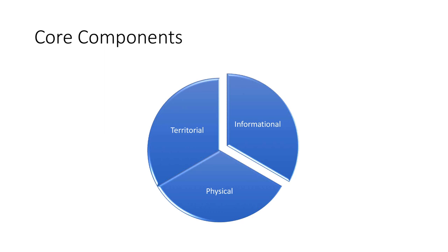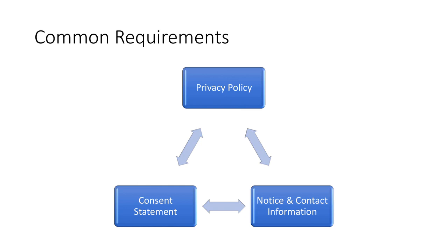Territorial privacy in law refers to your stuff — when I park my car, I expect it to be there when I get back. Informational privacy isn't just about the information we create when we send an email or text message. It also includes all the information created around the transmission of that information. You may have heard the term metadata — information created by machines when we use them — which can be used for behavioral analysis.